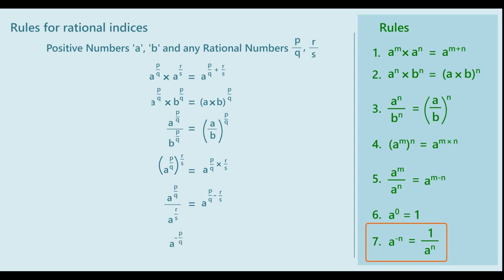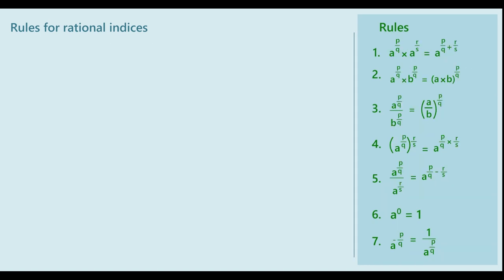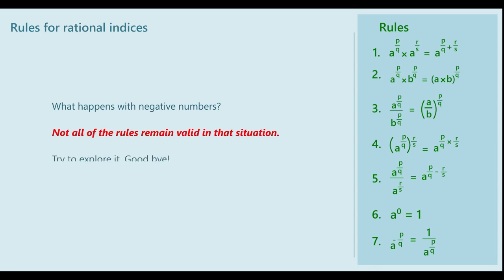And finally, A raised to (A raised to P by Q) equals A raised to P by Q. Notice that we have not proved all of these rules for rational number powers, but we have seen proofs of similar rules for natural number powers and have assigned meaning to the rational powers keeping the rules intact. You can try for the proofs of the above-mentioned rules. Now, at the end, I would like to draw your attention to the fact that we have said A and B are positive numbers while listing all these rules and while assigning meaning to A raised to P upon Q. What happens with negative numbers? Not all of the rules remain valid in that situation. Try to explore them.